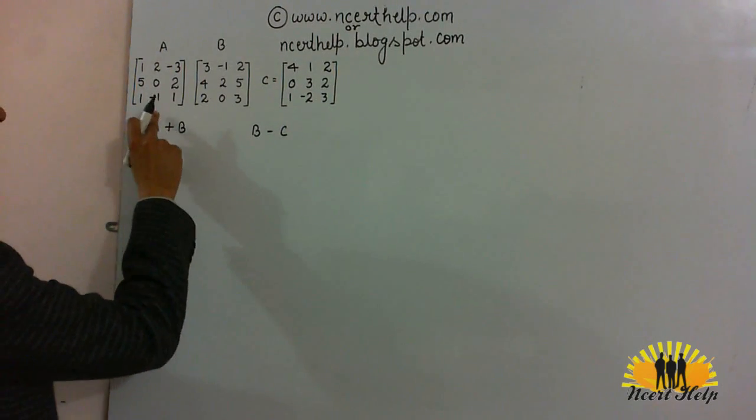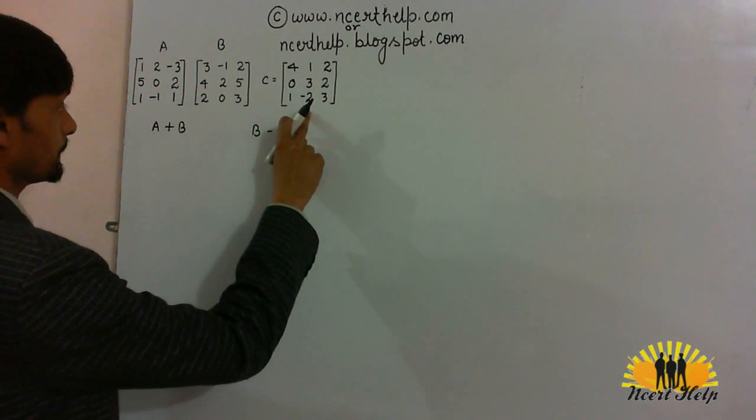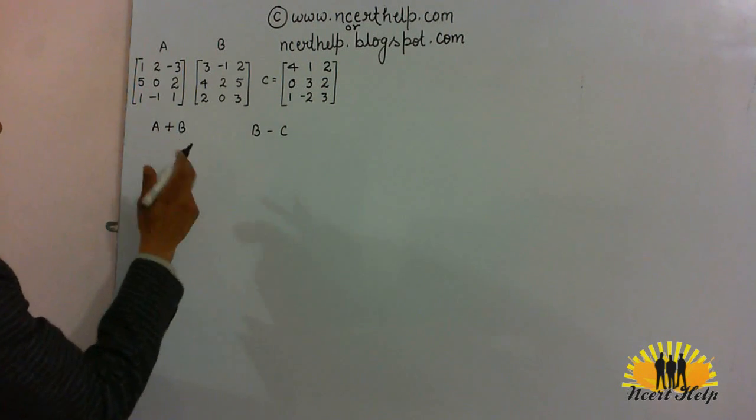Here, there are 3 matrices A, B and C. We have to find out A plus B.